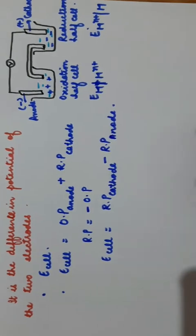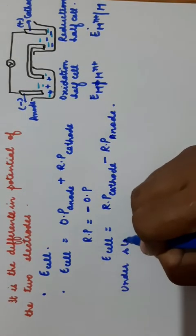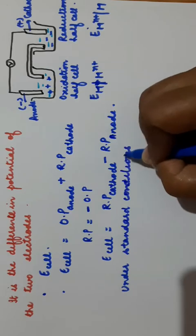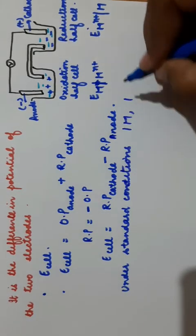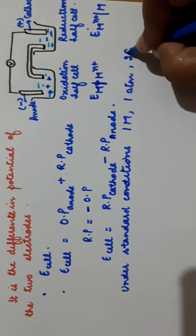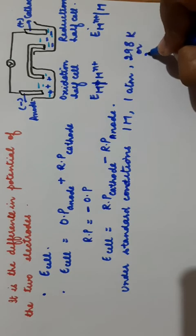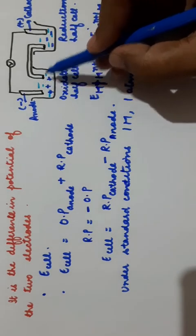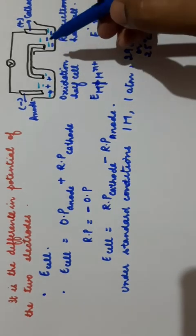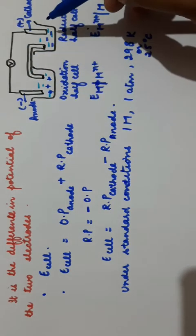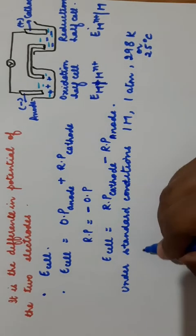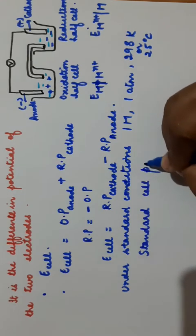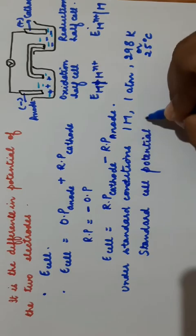If you are taking the standard conditions — the standard conditions are 1 molar concentration, or if there is a gas, 1 atmospheric pressure, and temperature 298 Kelvin or 25 degree Celsius — if we maintain all the standard conditions, that means 1 molar solution in each half cell, pressure of 1 atmosphere if there is a gas, and temperature maintained at 298 Kelvin, then E cell is known as standard cell potential, represented by E naught cell.